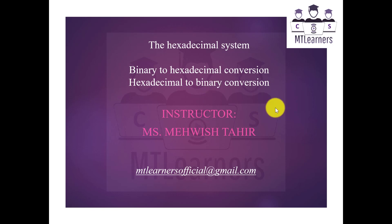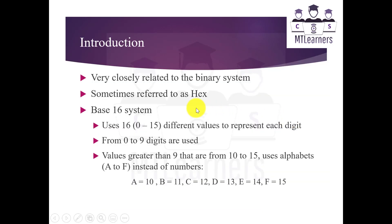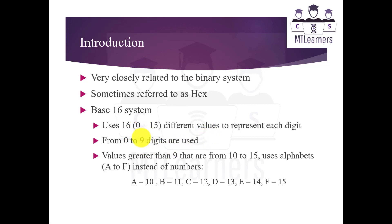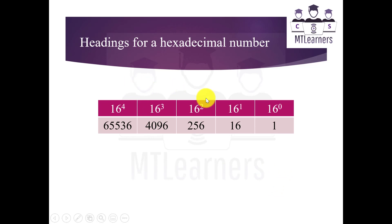The hexadecimal system is very closely related to the binary system. Sometimes it is also referred to as hex and it is a base 16 system, which means it uses 16 different values to represent each digit. From 0 to 9, digits are used, and when values become two-digit numbers, we use alphabets instead. So from 10 to 15, we use values from A to F.